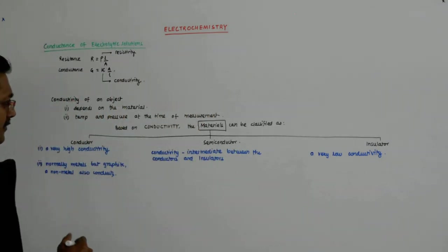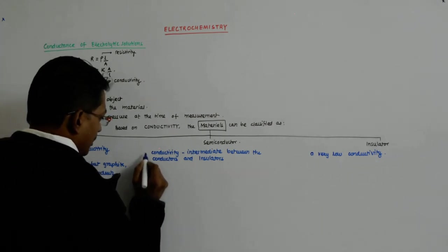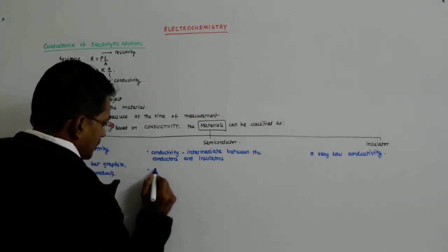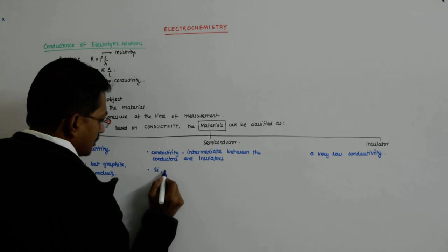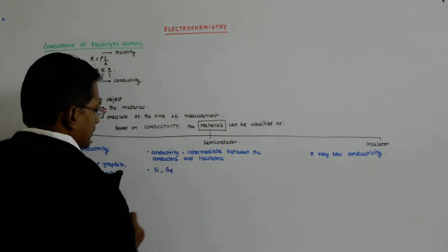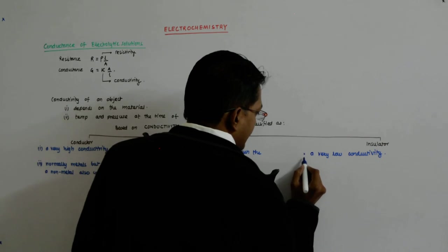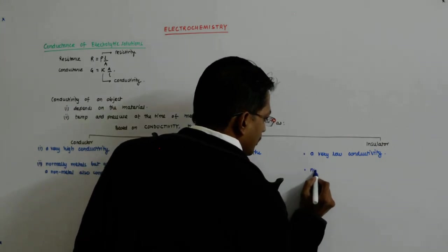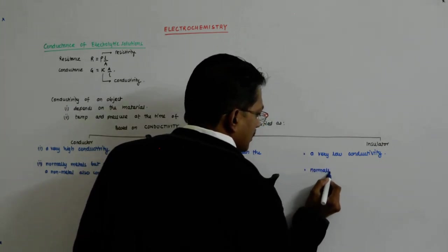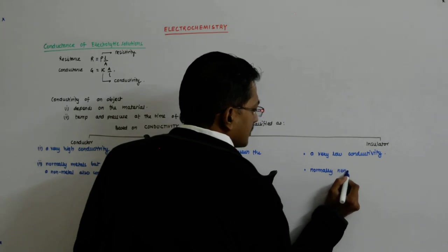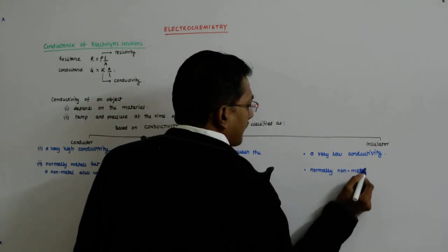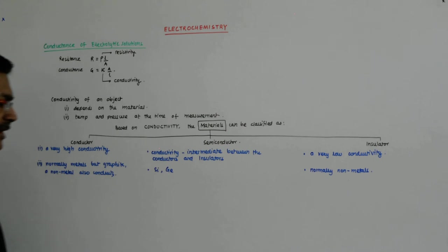Semiconductors are silicon, germanium. And these are normally non-metals. They are normally non-metals.